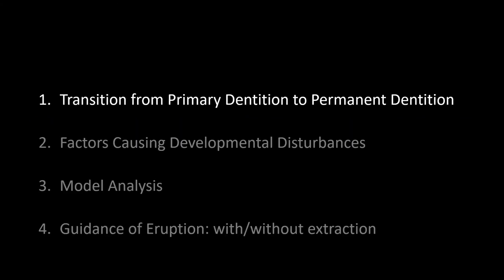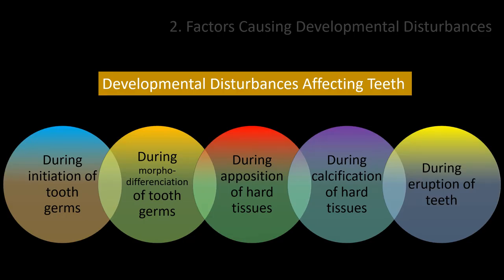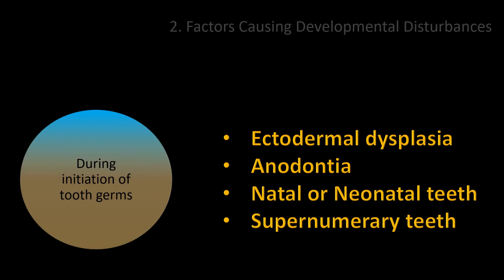All the mechanisms cited until now take place in normally developing patients. What are the factors causing developmental disturbances? Disturbances in tooth eruption may be effective in all developmental stages from formation to eruption. Ectodermal dysplasia, total or partial anodontia, the presence of natal or neonatal teeth, or supernumerary teeth are the factors effective during the tooth germ initiation period.